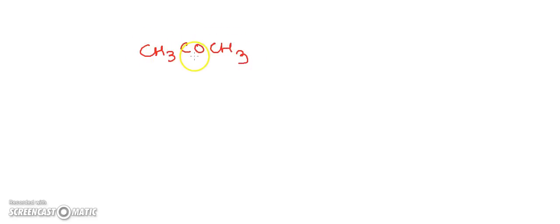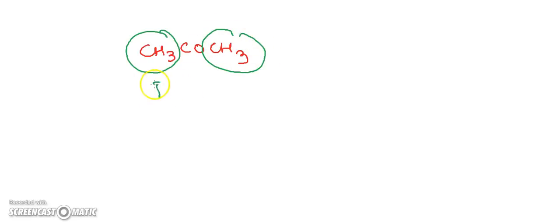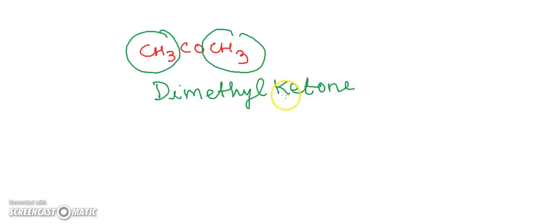For naming ketones, we have the common system and the IUPAC system. In the common system, ketones are named by using the names of the alkyl groups present in the molecule. For example, CH3–CO–CH3 has a carbonyl group in the center and two methyl groups, so this is called dimethyl ketone.